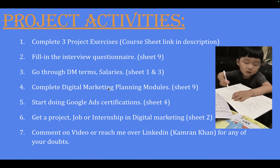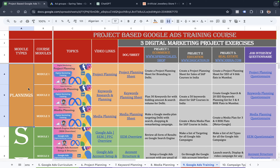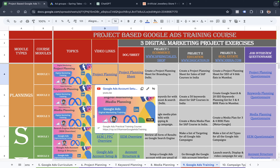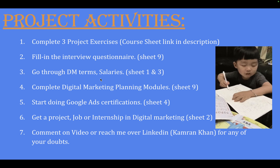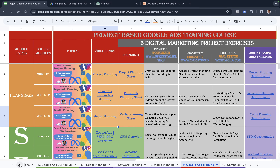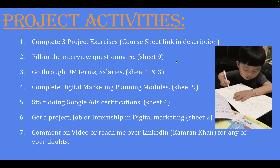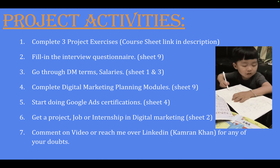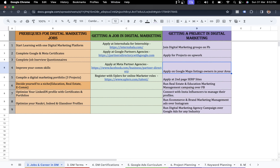Next, complete the additional marketing planning modules — the Google Ads sheet covers three modules: project planning, keyword research and planning, and creating a media plan. Also start doing the Google Ads certifications available in sheet number 4, and check sheet number 2 to find out how to get a project, job, or internship in digital marketing. If you have any questions, you can comment on this video or reach me on LinkedIn. I hope to see you in the next video of this course.